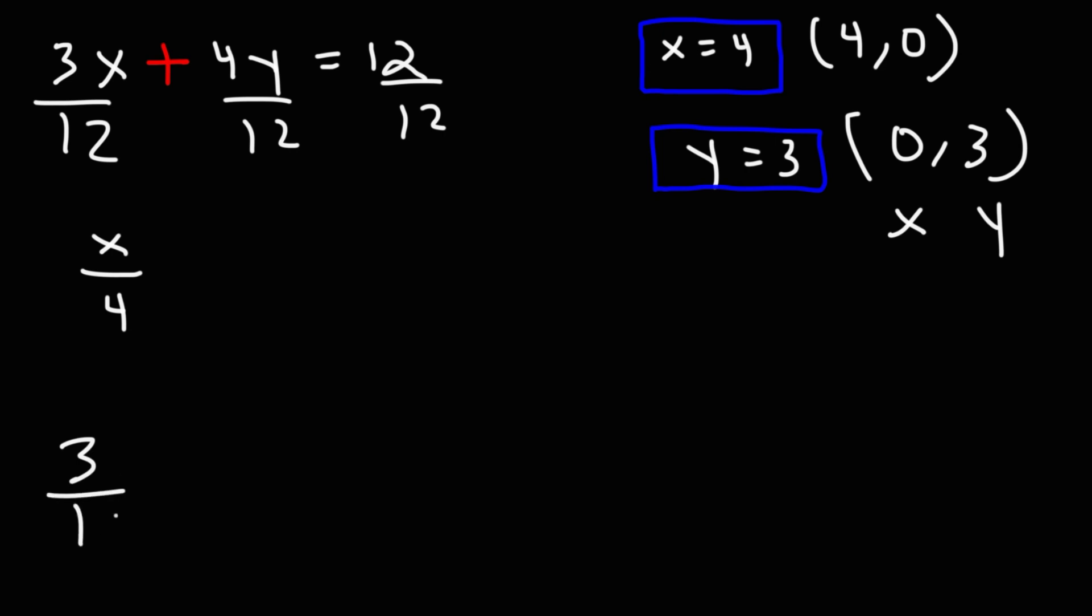Of course, if you have 3 over 12, you can reduce it this way. 12 is 3 times 4. 3 is 3 times 1. You cancel the 3, you get 1 over 4. Or you could just divide it backwards. 12 divided by 4 is 3. So this is going to become y over 3. And 12 over 12 is 1.